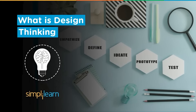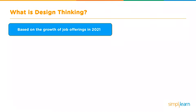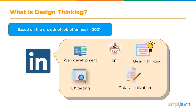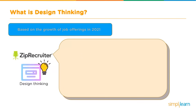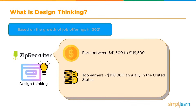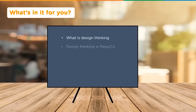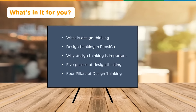Based on the growth of job offerings in 2021, LinkedIn confirms that the top in-demand technical skills are web development, SEO, design thinking, UX testing, and data visualization. According to ZipRecruiter, the majority of design thinking consultant employees earn between $41,500 to $119,500 per annum, with top earners making $166,000 annually across the United States. In this session we will discuss what design thinking is, its use cases, why it is important, the five phases, and the four pillars of design thinking.